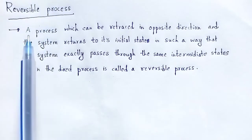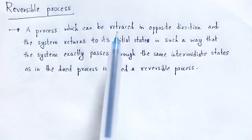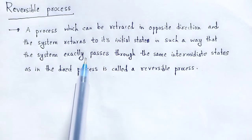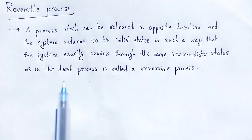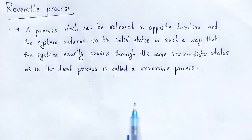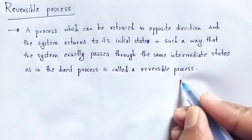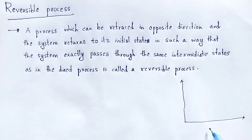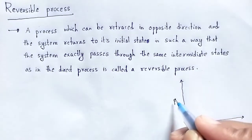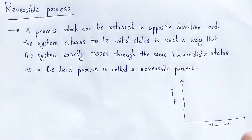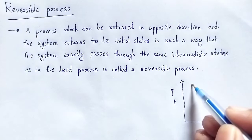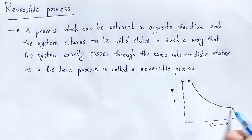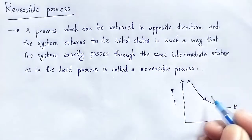As the name indicates, reversible means a process which can be retraced in opposite direction and the system returns to its initial state in such a way that the system exactly passes through the same intermediate states as the direct process. This is called a reversible process. If I draw the PV diagram here, let pressure be on the Y-axis and volume on the X-axis.